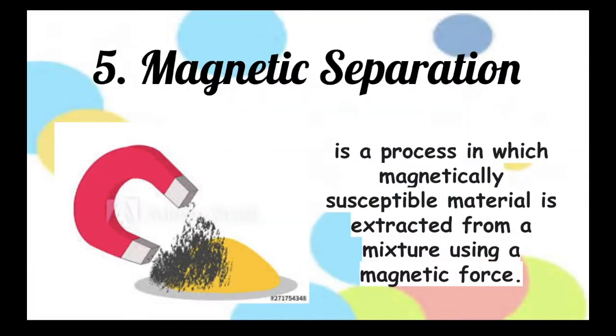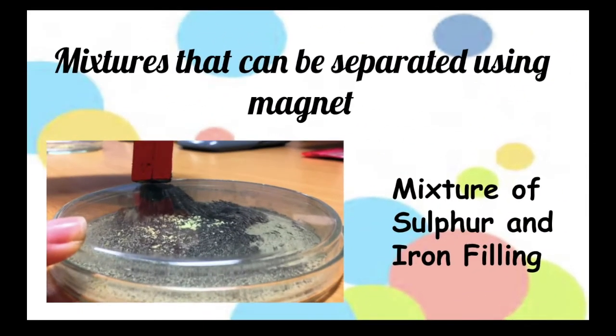Our fifth technique is called magnetic separation. It is a process in which magnetically susceptible material is extracted from a mixture using a magnetic force. A mixture composed of sulfur and iron fillings can be separated using magnetic separation technique.